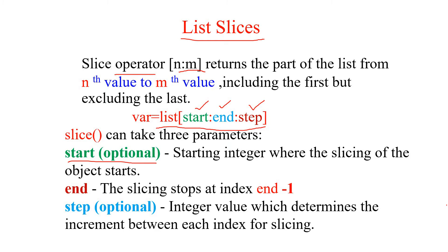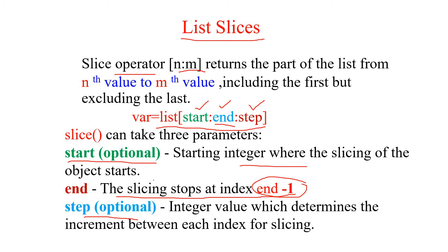The start value is optional — if omitted, extraction begins from index 0. The end value specifies where to stop, but the actual last extracted index is end minus 1. The step value is also optional; the default increment is 1, meaning elements are extracted one by one.